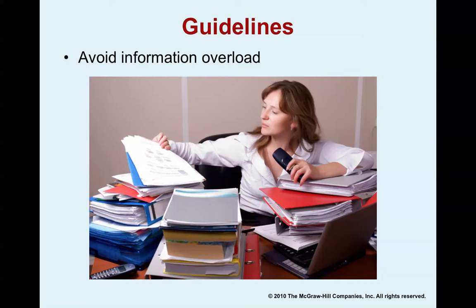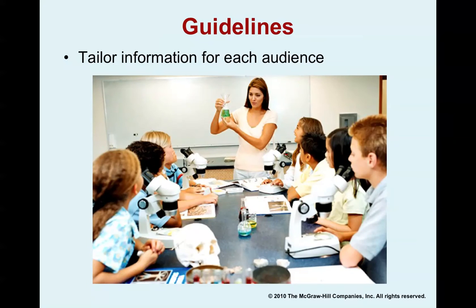We can only comprehend and remember so much information at one time. Make sure you tailor your information to each audience. Like a chemistry teacher, you want to find out what listeners know and what they don't know. If you assess the knowledge level, you can avoid boring your listeners with information everybody already knows, and you can avoid talking over people's heads. If you're using complex terminology and jargon that people may not be familiar with, you may have to describe that as well — so tailor your information for each audience.